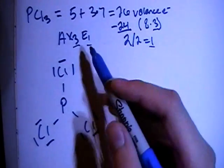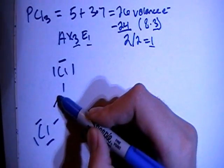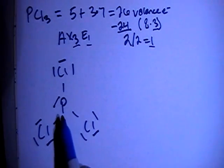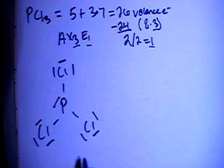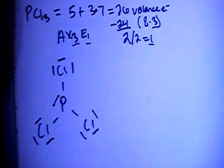And then we're going to have the 1 non-bonding electron pair left, put that right on there. And now we see that the phosphorus has 8 electrons, and so does every chlorine. So this looks to be the right structure,